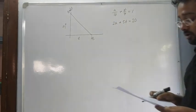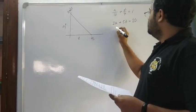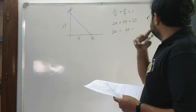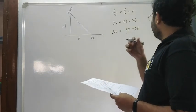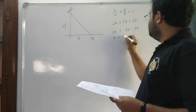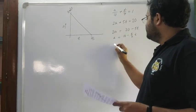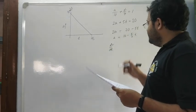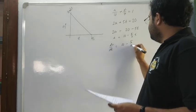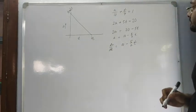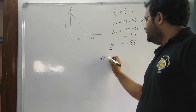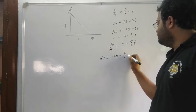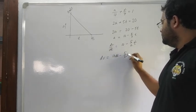So 2a plus 5t equals 20, giving a equals 10 minus 5 by 2 times t. Therefore dv equals 10 dt minus 5 by 2 times t dt.